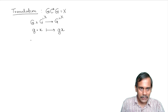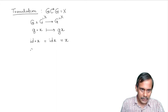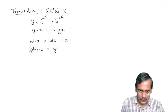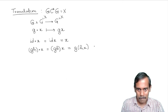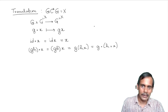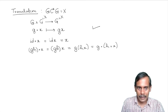Let's check the axioms for left translation. The identity axiom: the identity element acting on X gives identity times X, which equals X. For the compatibility axiom, GH acting on X equals GH multiplied by X by definition, and by associativity this is G times (H times X), which is G acting on H acting on X. So associativity takes care of compatibility for the translation action.